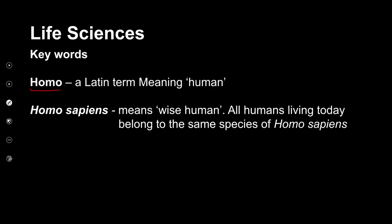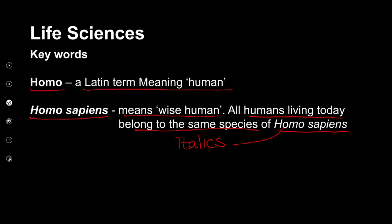The term homo is a Latin term meaning human or man. Specifically, Homo sapiens is the species that we belong to, and it means wise human. All humans living today belong to the same species, Homo sapiens. When we name a species, we use italics, and if you are not typing, then you underline the words. We always use a capital letter for the genus and a small letter for sapiens.